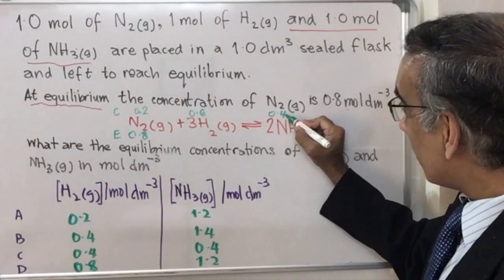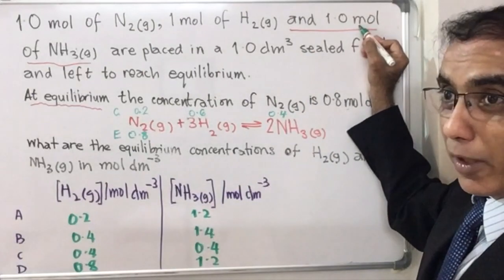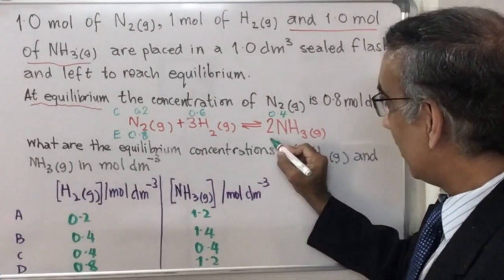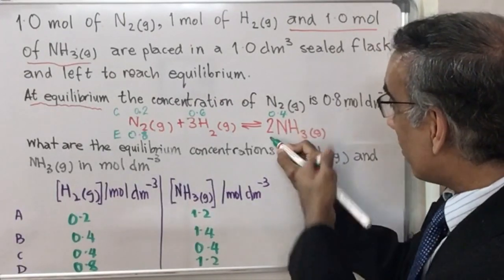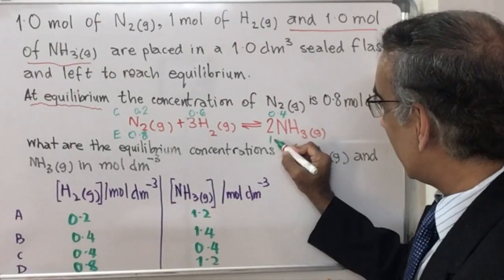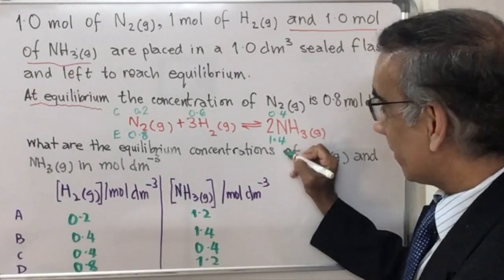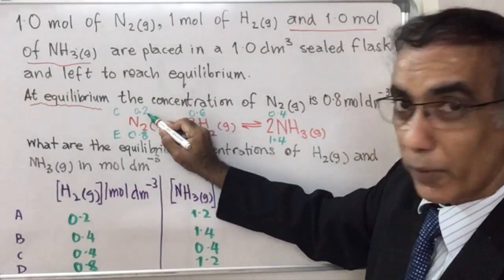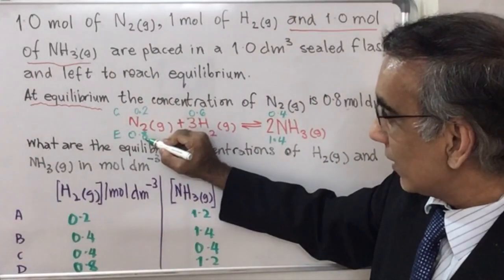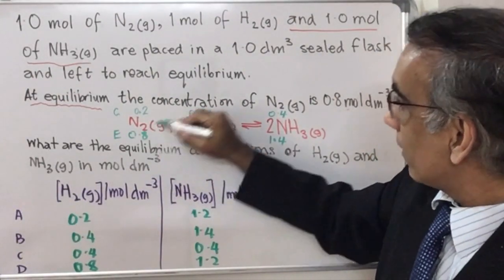If you have 0.4 moles of ammonia being formed and you began with 1.0, then at equilibrium, you'll have 1.0 plus 0.4. That'll be 1.4. At equilibrium, beginning with 1, 0.2 was reacted and you got 0.8 at equilibrium.